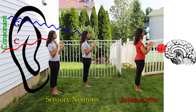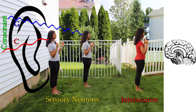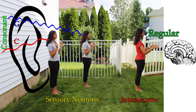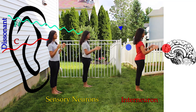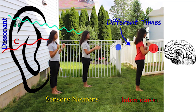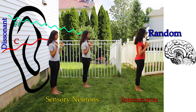With a consonant sound, the signals from the sensory neurons arrive at the same time, so the interneuron still fires just once, then recharges before it fires again. The result is a regular string of pulses. The signals from dissonant waves arrive at different times, and so the interneuron generates a random string of pulses.